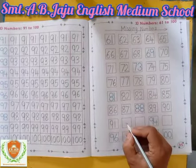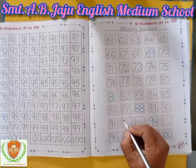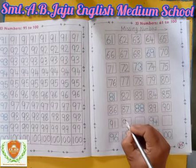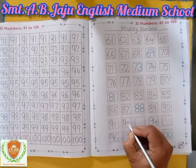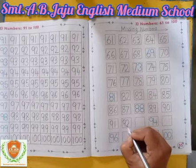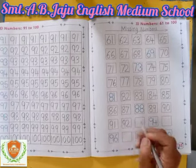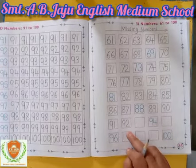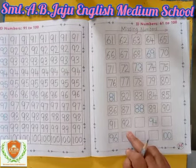After 91, which number will become? Write down 9, then write down 2. 92. After 92, which number will become? Write down 9, then write down 3.